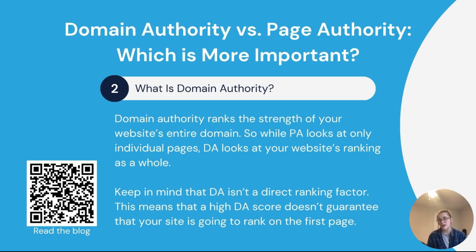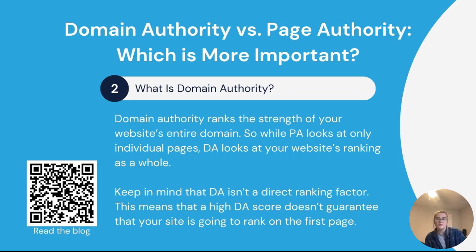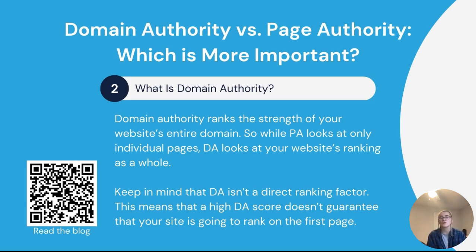Domain authority isn't a direct ranking factor — it just gives you an idea of where your website could rank. Having a high DA score doesn't guarantee that you'll rank on the first page. Think of it more as a comparative tool. It helps you predict how likely your domain is to appear in search results compared to your competitors. Both DA and PA are calculated using the same algorithm. DA is also ranked on a 1 to 100 scale — it's easier to grow from 20 to 30 than it is from 70 to 80, and the higher you are, the more likely you'll show up at number 1.